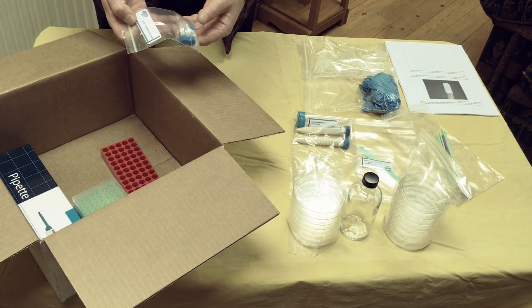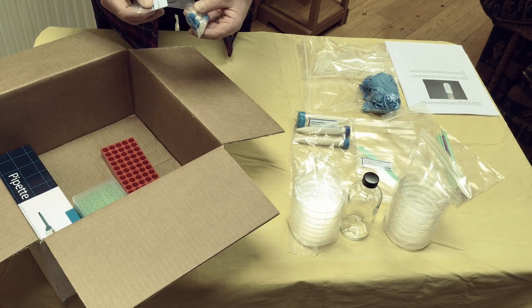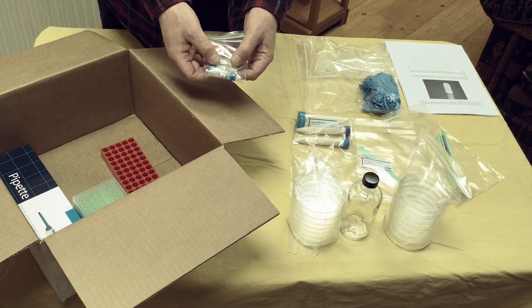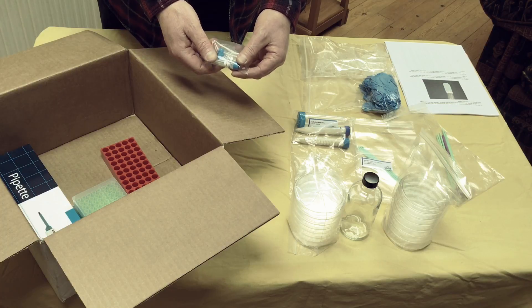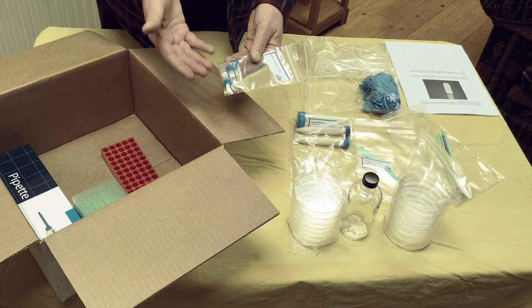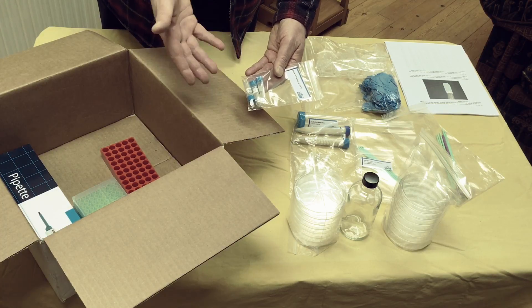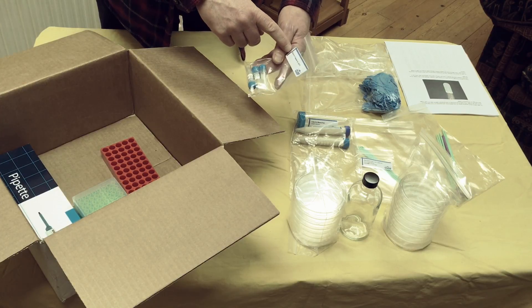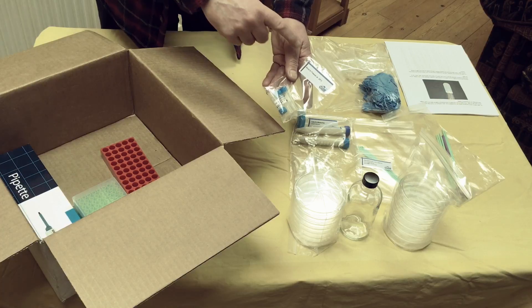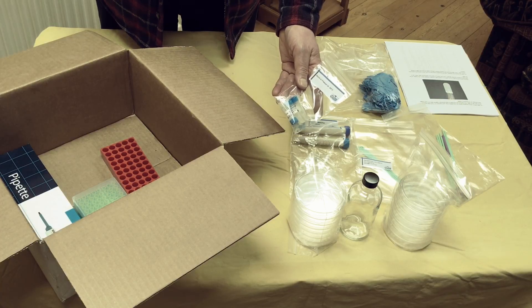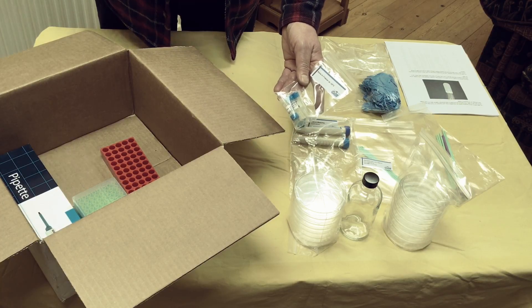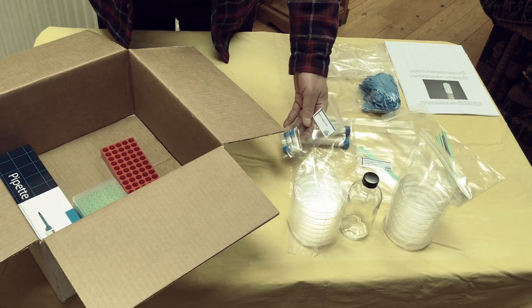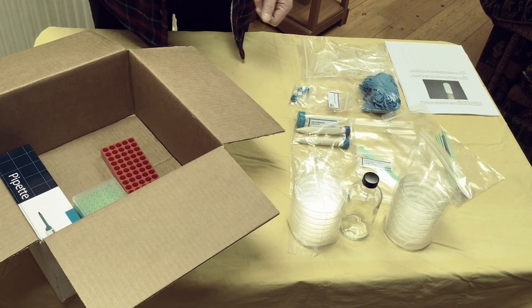And then what have we got here? This says bacterial Cas9. I think these are the biochemical substances that are necessary for doing the DNA editing. It says store in freezer at minus 20 degrees C, which is a bit worrying because these have been in transport. So they haven't been stored in a freezer. I'll have to look up what that's all about.